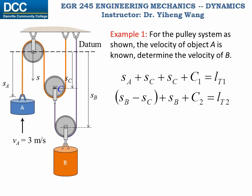And now we can combine these two equations by canceling out the middleman SC, and get SA plus 4SB equals to a total constant length.